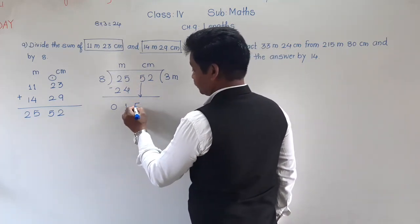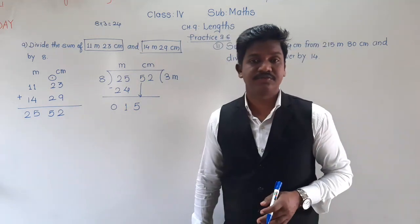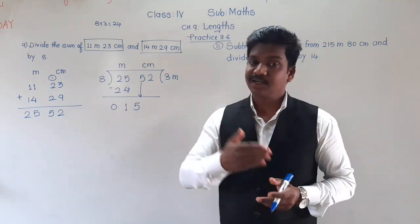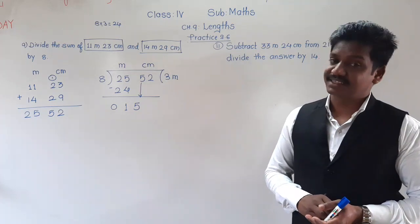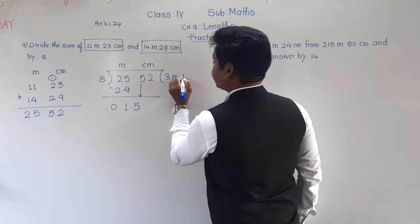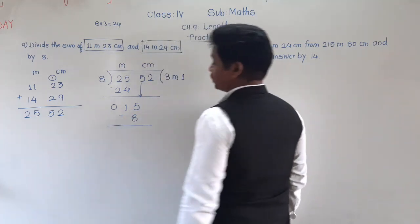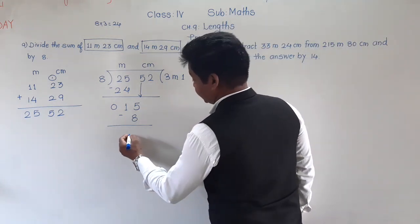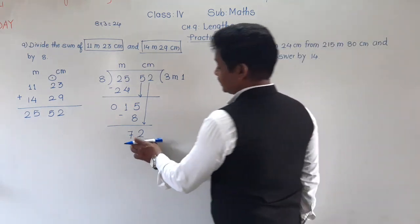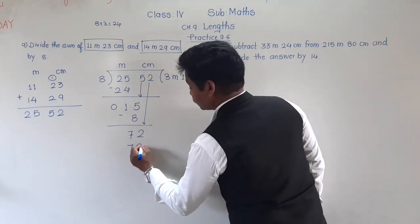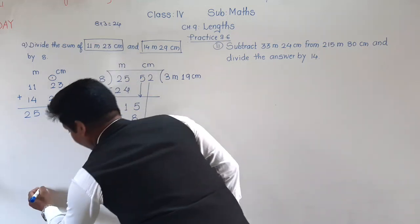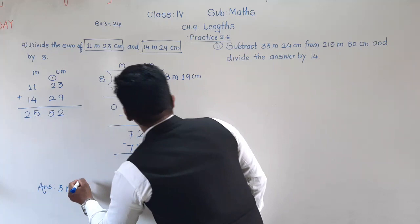Now let us divide the centimeter column, bringing 1 digit at a time. The remainder 1 and the digit 5 give us 15. Is 15 in the table of 8? No. 8 ones are 8, 8 twos are 16 which is greater than 15, so we take 8 ones are 8. 15 minus 8 is 7. Bring 2 down: it becomes 72. Is 72 in the table of 8? Yes — 8 nines are 72. So the answer is 3 meter 19 centimeter.